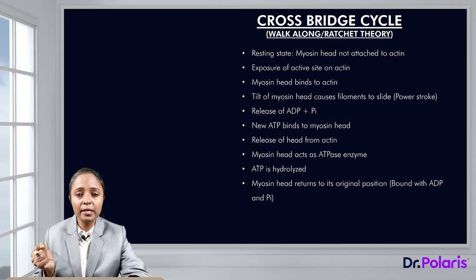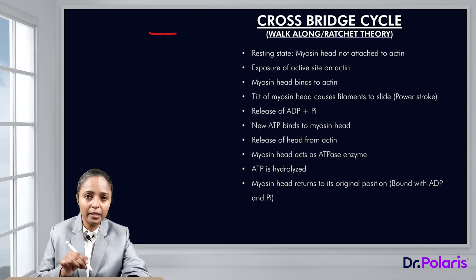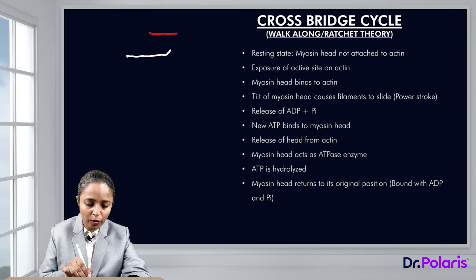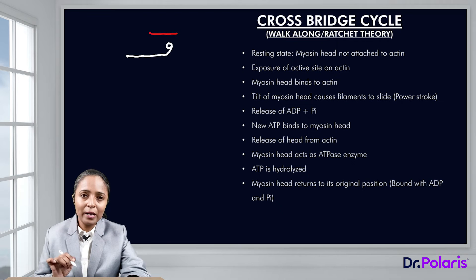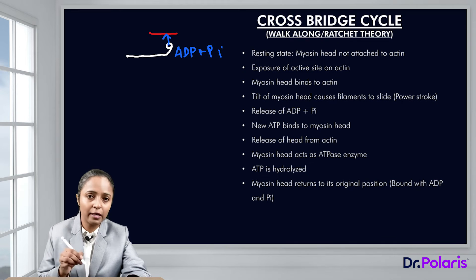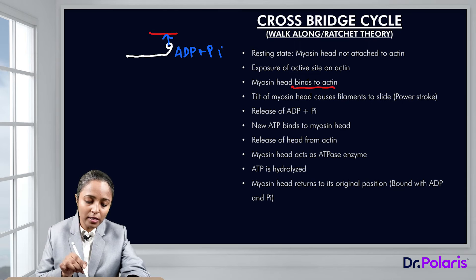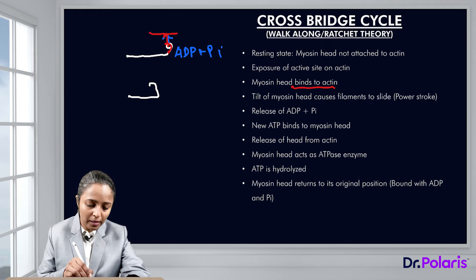How the myosin head moves and causes the power stroke is explained by the walk-along theory or ratchet theory, that is cross-bridge cycling. The myosin molecule has a head region. Once the active sites of actin are exposed, the myosin head is bound with ADP and phosphate and is ready to bind with the active sites of actin. Exposure of the active site causes the myosin head to bind to actin, and as soon as it binds, there is a conformational change in the myosin head causing it to bend.